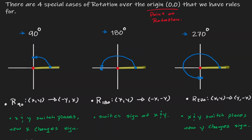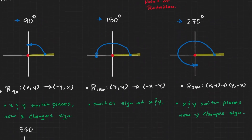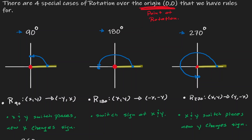We said there were four cases, so what is the last case? The last case is when we rotate 360 degrees. Notice that in a 360-degree rotation, you complete a full circle — your starting point is the same as your ending point — therefore the image is equal to the pre-image. Given any coordinate point (x, y), the image is itself (x, y). Keep in mind that these rules are only true when we make the origin the point of rotation. If the point of rotation is not the origin, these rules do not apply.